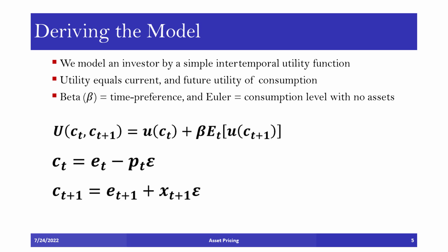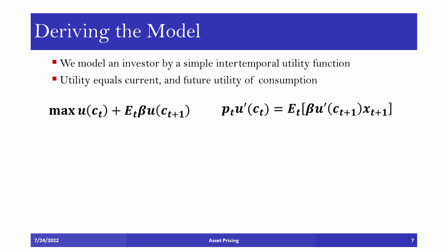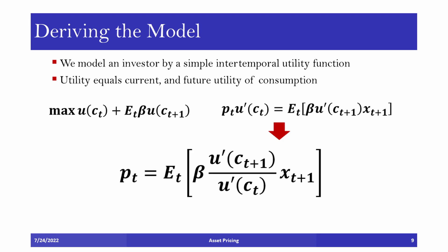Thus, the investor faces a trade-off between investing and consuming. Given the investor's budget constraint, a higher value of P times epsilon will lower current consumption. The next equation gives us future consumption equals the future consumption level plus the payoff times the quantity of the asset. As we stated earlier, the payoff is future price plus dividends. By setting the derivative with respect to quantity equal to zero, we obtain the optimal consumption choice, and by dividing the right-hand side of the equation with the utility of current consumption from the left-hand side, we once again derive the basic pricing equation.